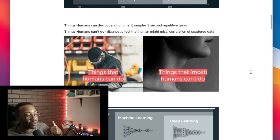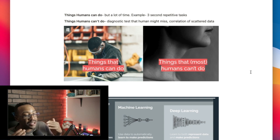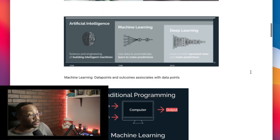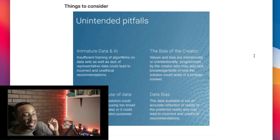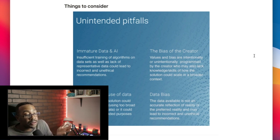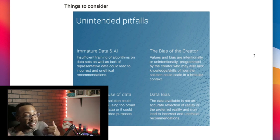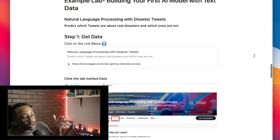The course also allows you to understand the power of the different types of tasks you could be creating when you understand what machine learning and AI can do. It breaks down the difference between artificial intelligence, machine learning, and deep learning — a lot of times these are just buzzwords thrown around. In this course you can clearly understand what these things are and then decide what's the best case for your project. It also talks about things to consider when building these AI models, because there could be unintended pitfalls or consequences based on different things that could be happening to the data.